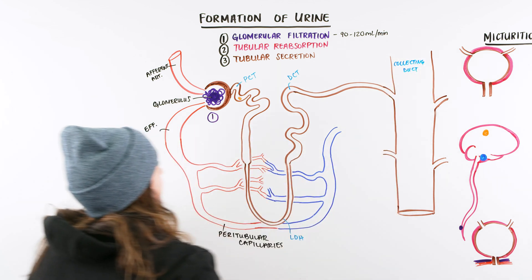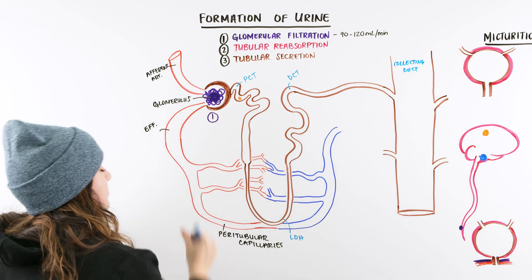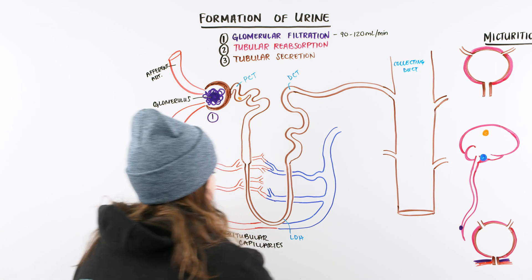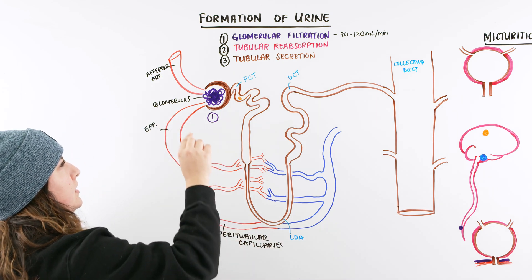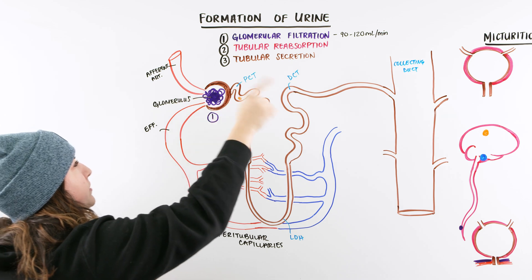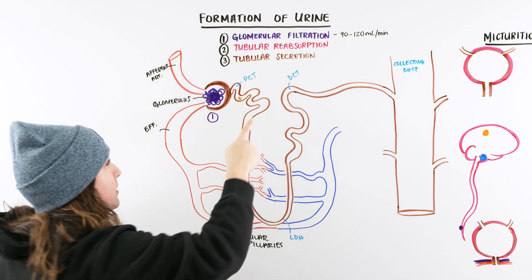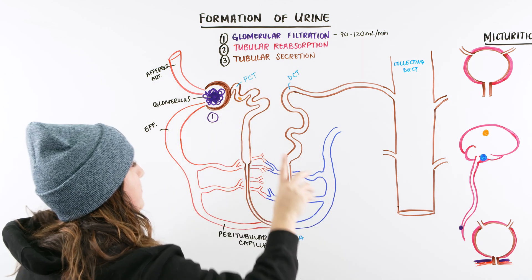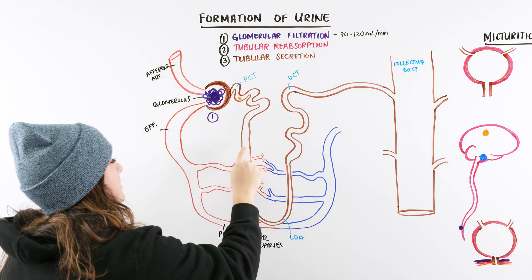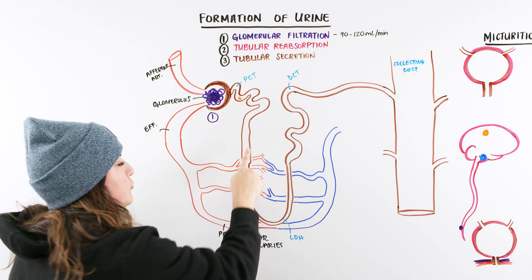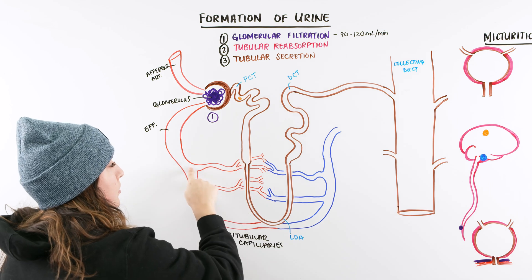So that filtrate eventually makes it into our proximal convoluted tubule. What happens then is people start getting a little confused. It's tubular reabsorption and tubular secretion. So when I remember this, tubular reabsorption means there's things in the tube, in our filtrate, that want to get back into our blood.